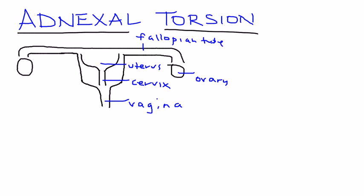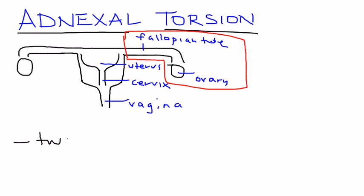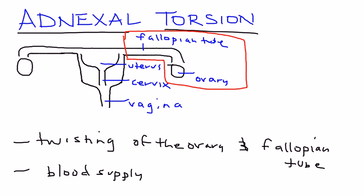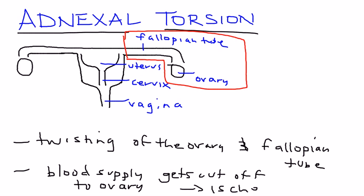The adnexa refers to this region right here — the region involving the fallopian tube and ovary. So adnexal torsion is essentially twisting of the ovary, and sometimes also involves the fallopian tube. When this twisting occurs, the blood supply to the ovary gets cut off, which can lead to necrosis. This ischemia can be very troublesome and cause infertility down the road.